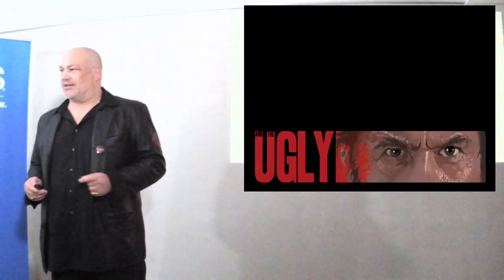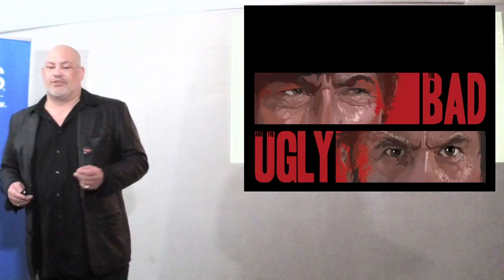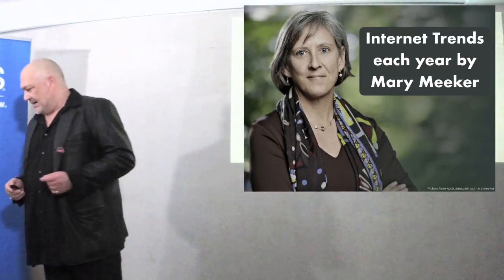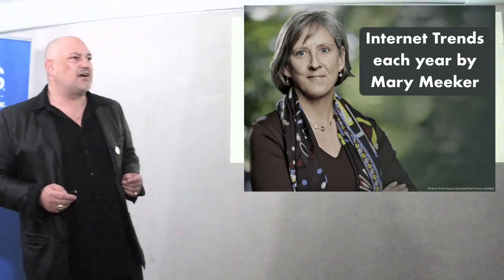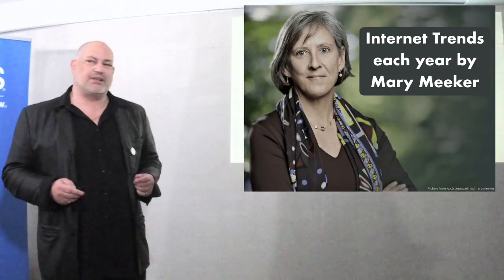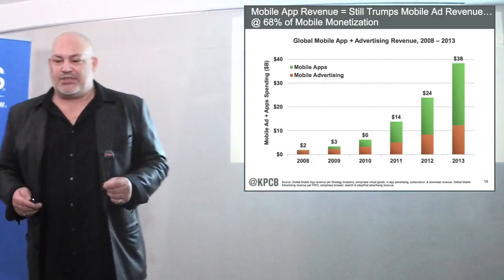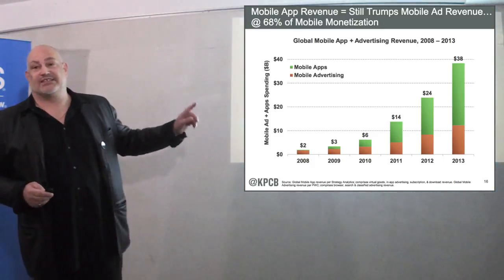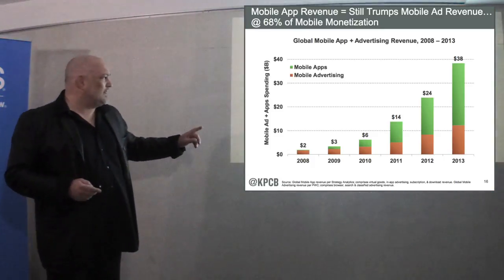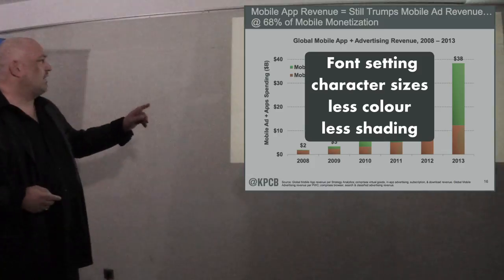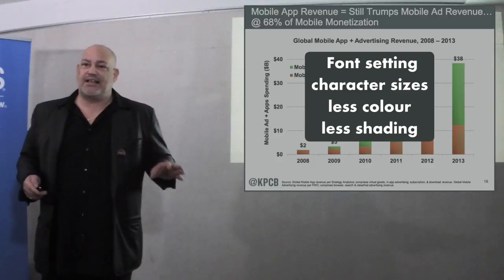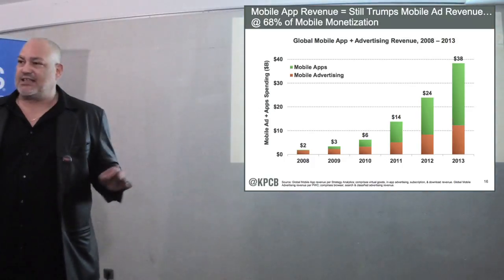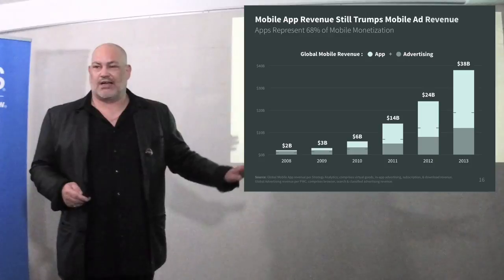This was just the part of the ugly. Now we're coming to the bad. This is Mary Meeker — she publishes every year some data about the internet and she really has good data, but she doesn't have good design. It's already better than NSA, absolutely. But I still say we have to fix the font setting, the character setting, we need less color, less shading. And this slide could look like that — how nice is it?